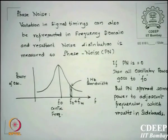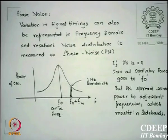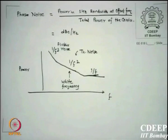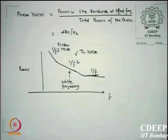Phase noise is defined as the power in a 1 Hz bandwidth at an offset frequency (F0 + Fm) divided by the total carrier power. It is expressed in dBc/Hz — decibels relative to the carrier per hertz. This is a specification given to VCOs. Good designers must be aware of phase noise even if it is not always the focus of a course.